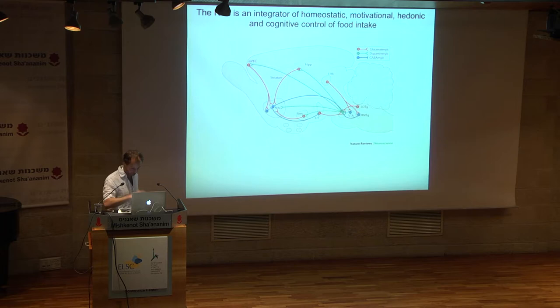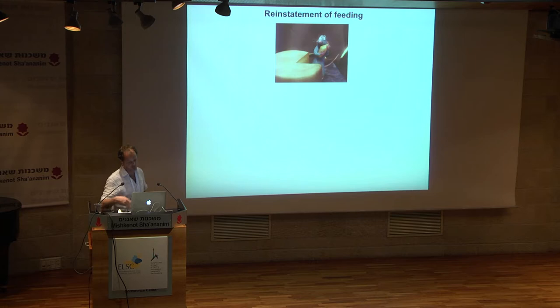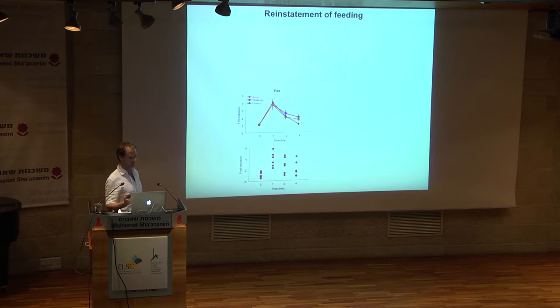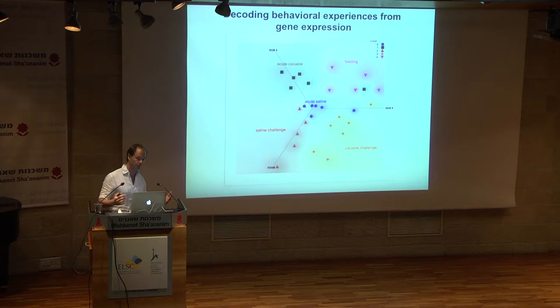We then tried another type of experience: feeding, since the accumbens is an integrator of many features of food intake and the experiment is easy to perform robustly. We took the food away from the mouse and gave it back 24 hours later, then looked at the gene inductions. FOS was induced to precisely the same level as following the cocaine experiences, whereas EGR2 induction was reminiscent of the acute cocaine response but differed in its dynamics.